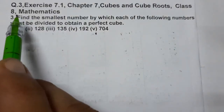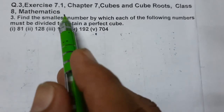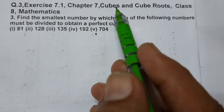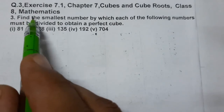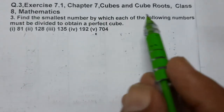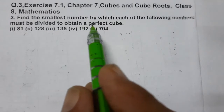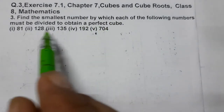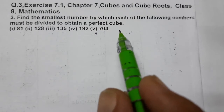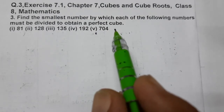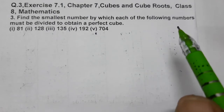Hello students, today we are going to do question number 3 of Exercise 7.1, Chapter 7 - Cubes and Cube Roots, Class 8 Math. Find the smallest number by which each of the following numbers must be divided to obtain a perfect cube. These numbers are not perfect cubes, and we have to divide — unlike the last question where we multiplied, now we have to divide out whatever extra number is there.